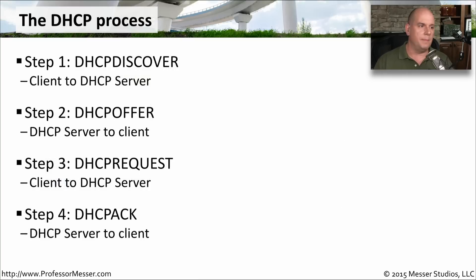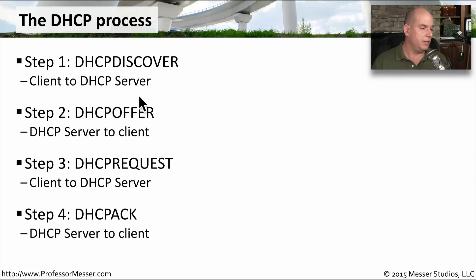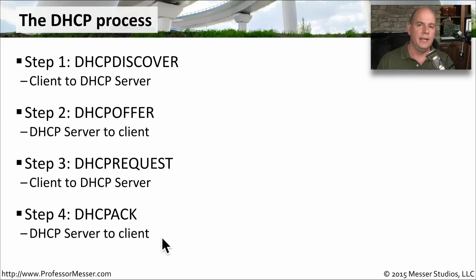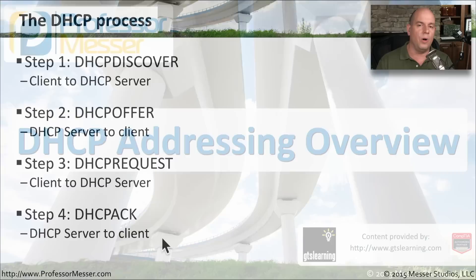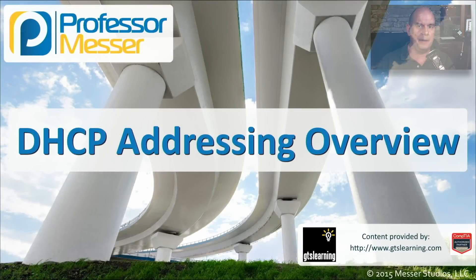So there are our four steps: Discover, Offer, Request, and Acknowledgment. Discover is client to server. Offer is server to client. Request is client to server. And the acknowledgment is server to client. It's a relatively straightforward process, but every time a device hits the network and begins to get a DHCP address, it will follow all four of these steps every time.